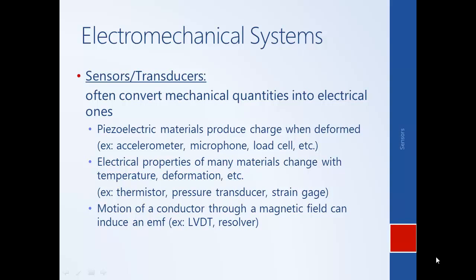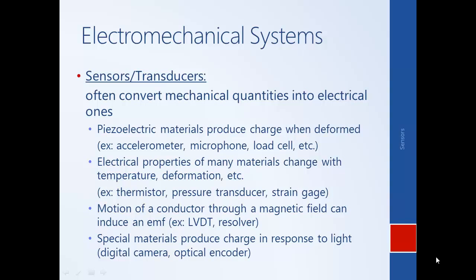Other sensors rely on electromagnetic induction — that is, the motion of a conductor through a magnetic field can induce an EMF, a voltage. Examples of these include LVDTs (linear variable differential transformers) and resolvers. A final class of sensors relies on special materials that produce charge in response to light. This includes optical encoders and digital cameras consisting of an array of CCD elements, or charge-coupled devices. We'll now pick a few examples of electromechanical sensors of particular importance to automotive and electric vehicle applications.